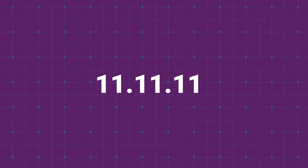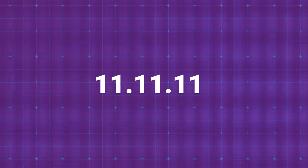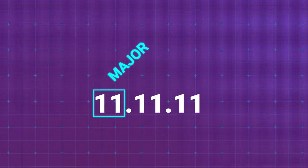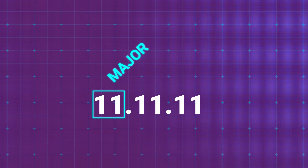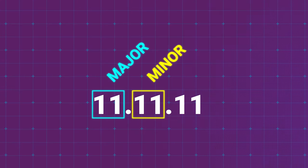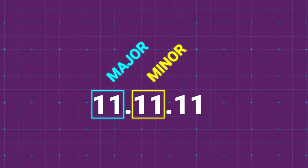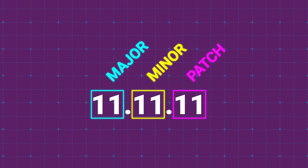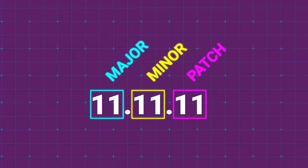Semantic versioning is a system of numbering software versions, with each number containing three digits separated by a dot. The first digit is the major version, the second digit is the minor version, and the last digit is the patch version.